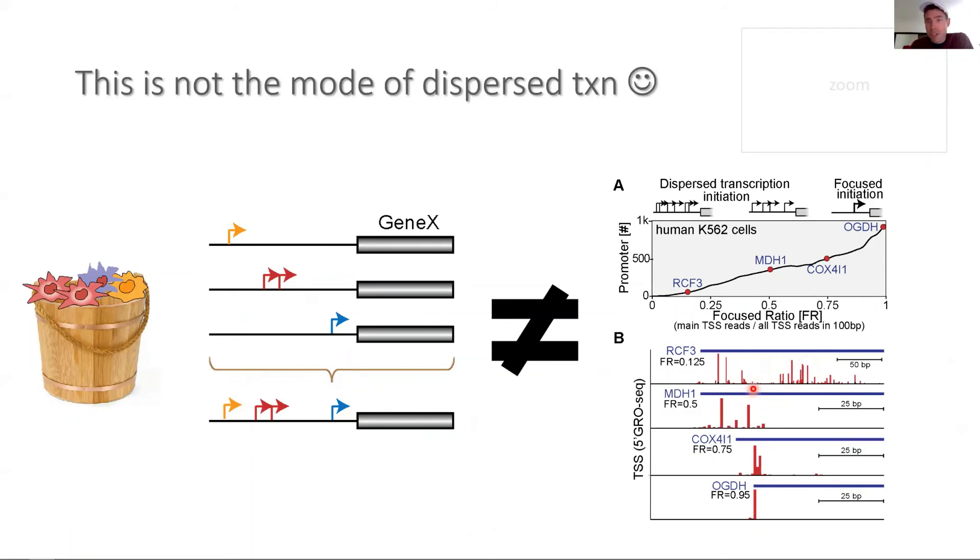For all of you now that you're start site experts, this is not the way dispersed transcription initiation works. A few words on that. In textbooks you often hear about focused promoters, TATA box, single start sites. Less than 8% of human promoters do that. The vast majority of human promoters have multiple start sites, so-called dispersed. But this means that all these start sites usually happen within the same cell, often within the same allele. It's not an accumulation of different cells. This is not the mode of how dispersed transcription initiation works.